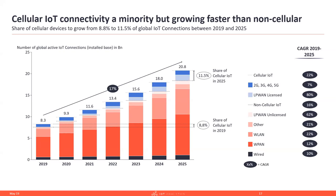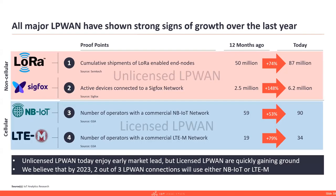We recently published a report on low power wide area networks. We found that LPWAN in unlicensed spectrum — LoRa and Sigfox in particular — still have an early market lead, but NB-IoT and LTE-M are growing much faster and will take over the leadership from those two. We believe that by 2023, two out of three LPWAN connections will be based on cellular low power wide area networks.